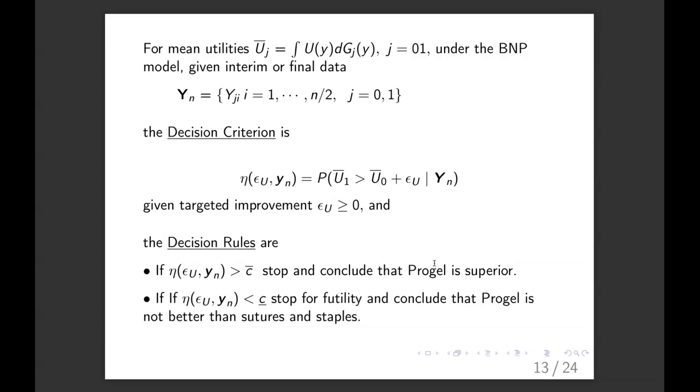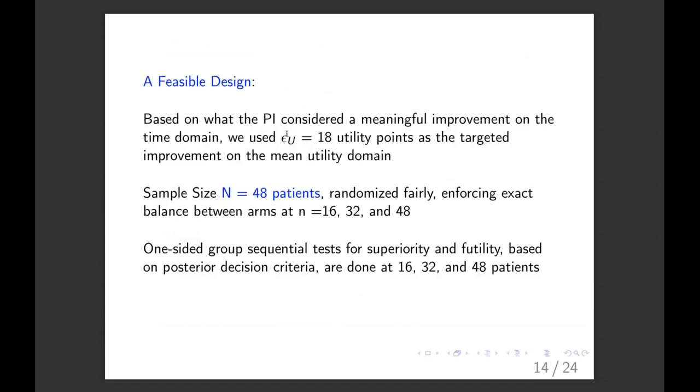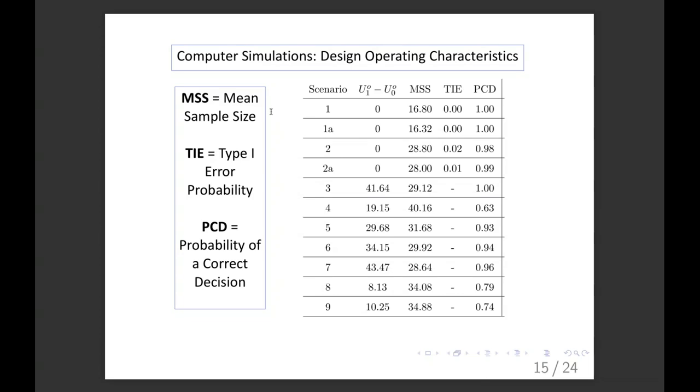And the decision rules are if this posterior criterion is bigger than some upper cutoff, you stop and say, wow, ProGel is superior. And if it's below some lower cutoff, you stop for futility. So to get a feasible design, the epsilon is 18 utility points. And the sample size is 48 patients. That may seem tiny, but this structure actually is rather information rich. And it allows you to get a lot out of 48 patients who make decisions at 16, 32 and 48.